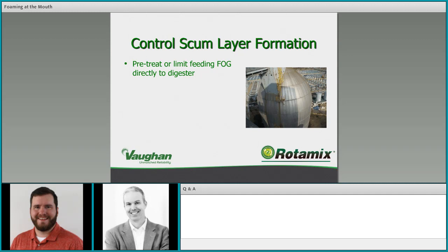Controlling scum layer formation: pre-treat or limit feeding FOG directly to a digester — you don't want to push a big slug of FOG in all at once. Many facilities have a receiving station with some capacity so FOG can be metered into the digester. There's also something to be said for pre-treatment or hydrolysis of FOG to break down grease and fats into long-chain fatty acids, making them more soluble and less likely to create a surface layer.